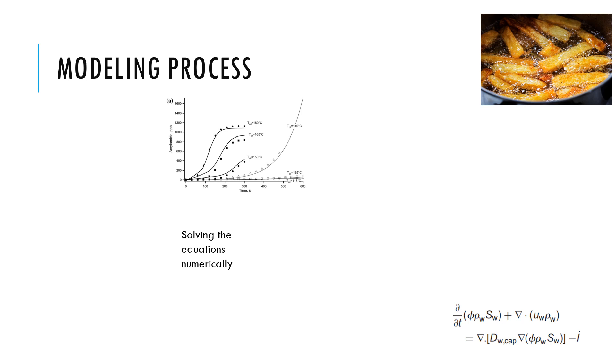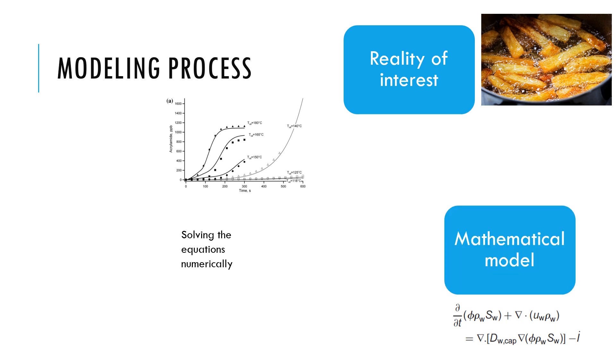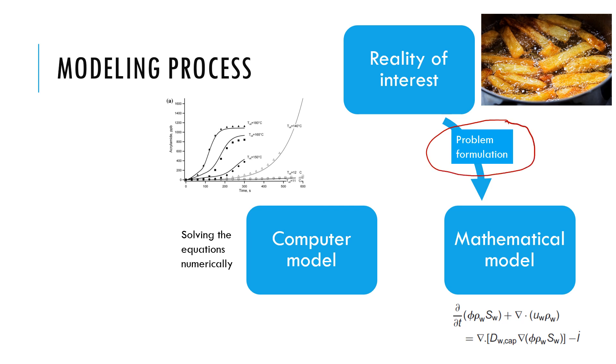Here is another graphical representation of the modeling process where we start from some real process of interest, develop its mathematical model consisting of equations, and solve the equations in a software generating results. This first step is what we are calling problem formulation, going from real process to its mathematical model.